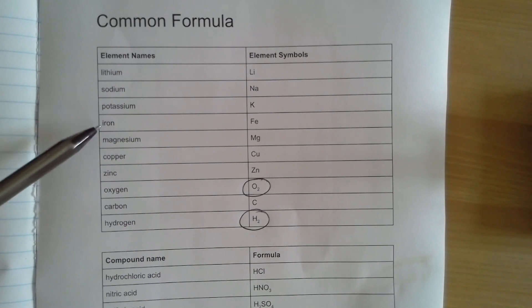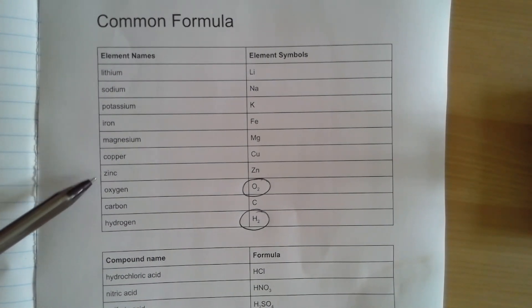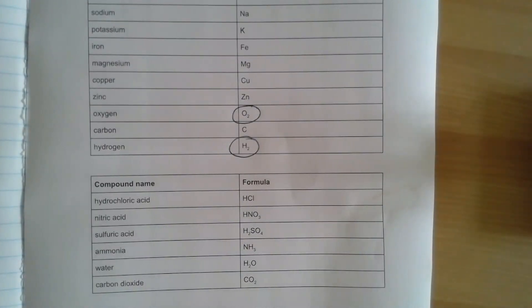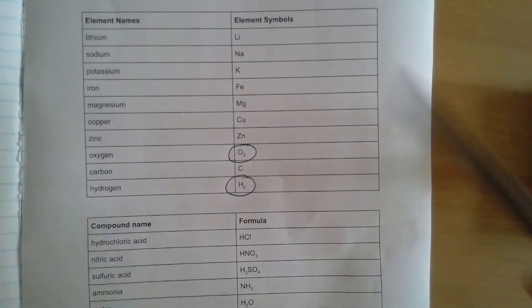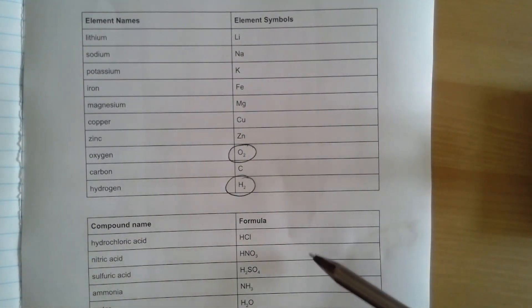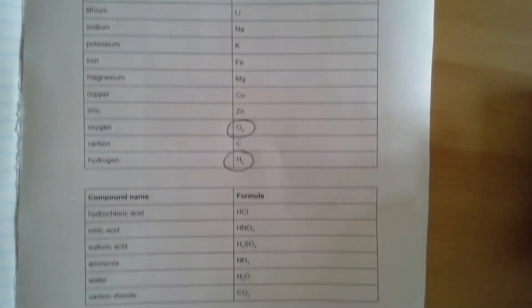Attached to this lesson is this sheet where we've got the common formula of 10 elements here: lithium, sodium, potassium, iron, magnesium, copper, zinc, oxygen, carbon and hydrogen. And then six compounds: hydrochloric acid, nitric acid, sulfuric acid, ammonia, water and carbon dioxide. And we've got their symbols listed next to the elements here and the formulae next to the compounds.